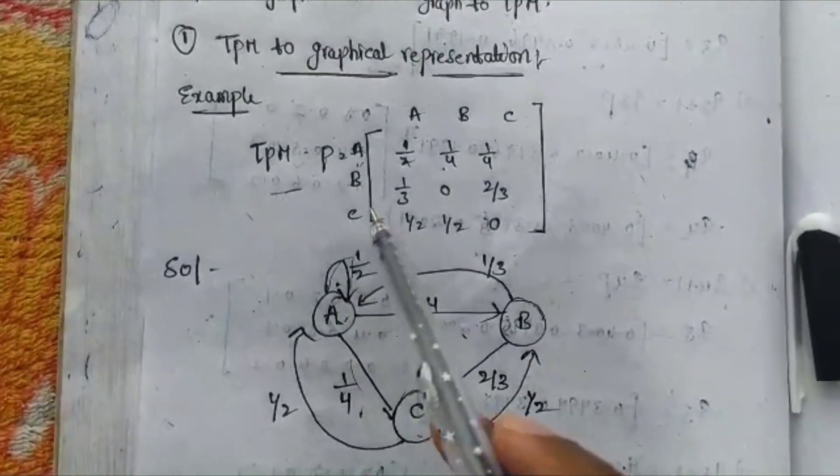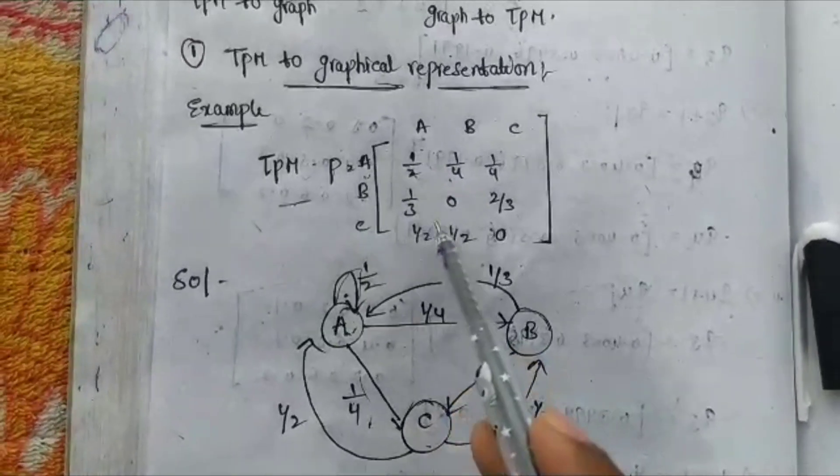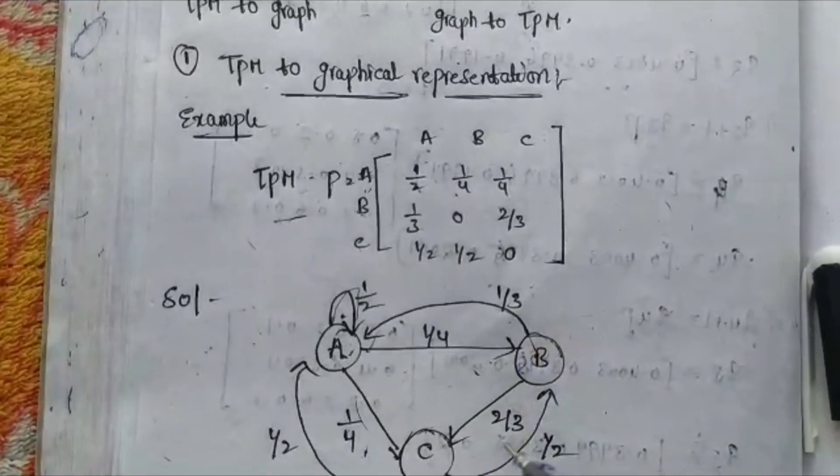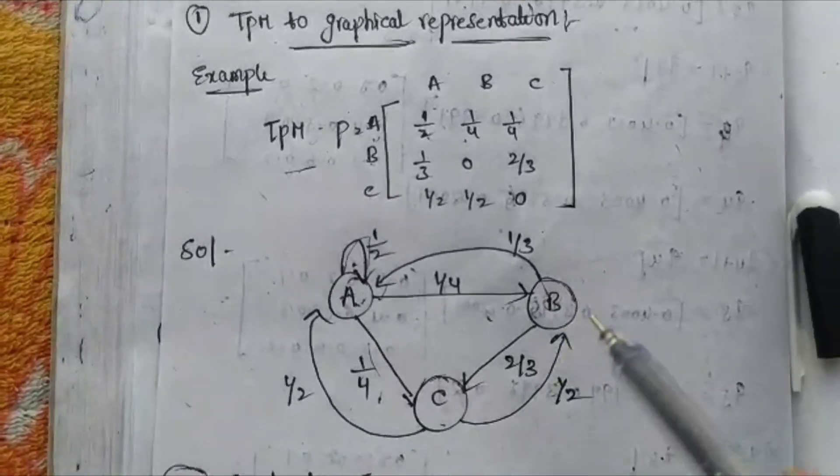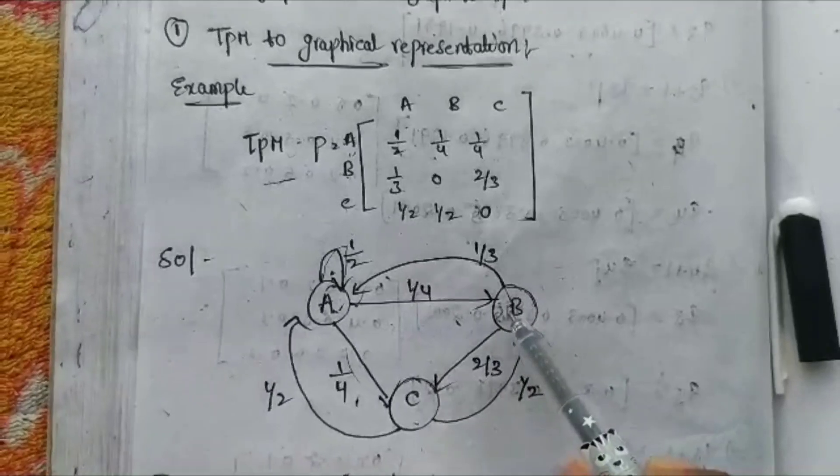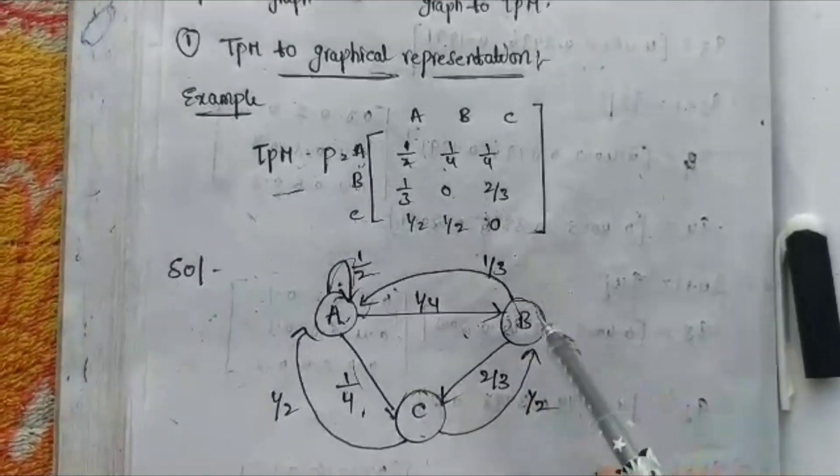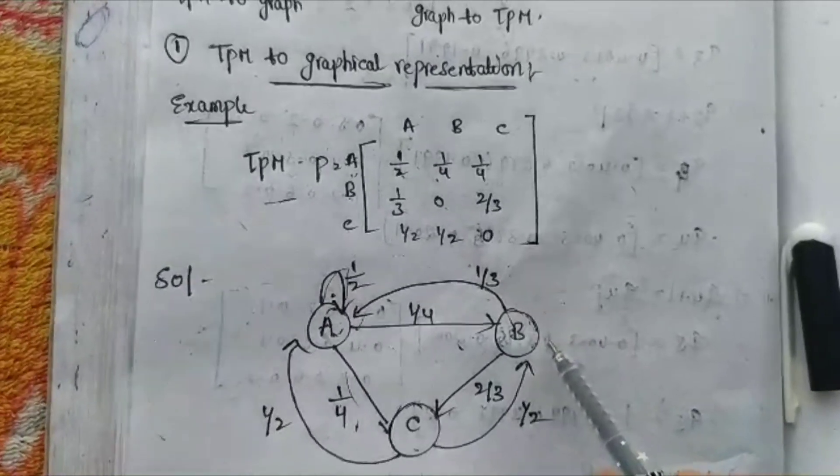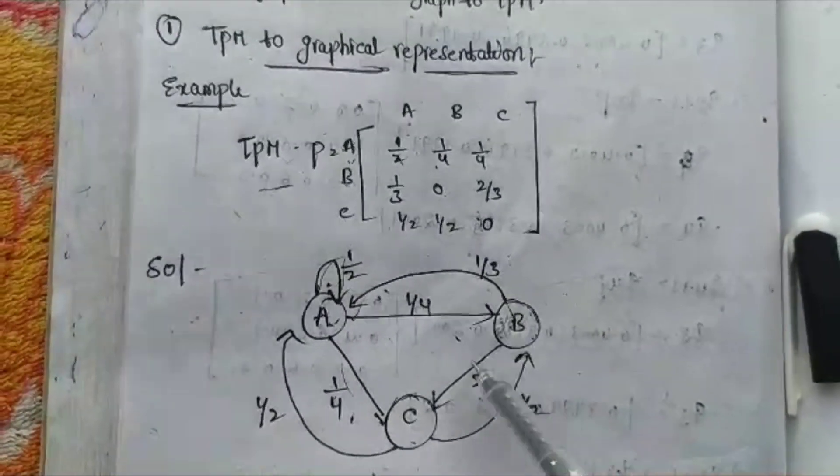From B to A, it is 1/3. The direction is most important because it is a directed graph. B to B is 0, meaning B has no self-loop, and B to C is 2/3.